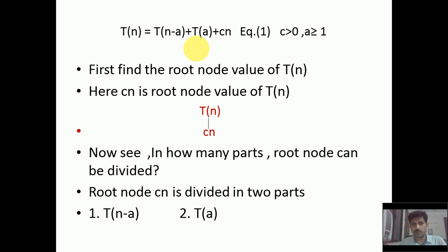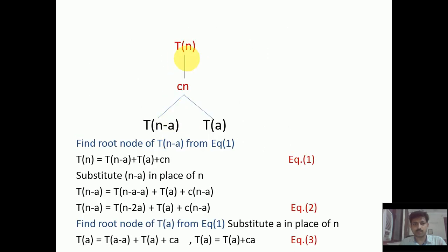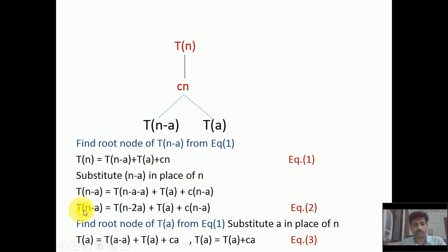We find the root node value of T(n-a) using equation number one by the substitution method. We substitute n-a in place of n. So T(n-a) becomes T(n-2a) + T(a) + c(n-a). This gives us the root node value c(n-a) with two sub-problems: T(n-2a) and T(a).